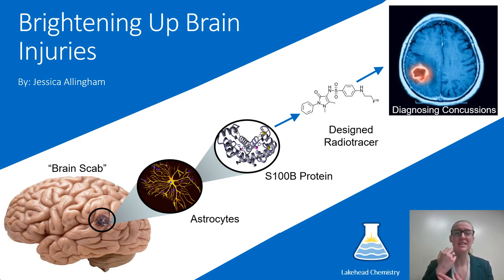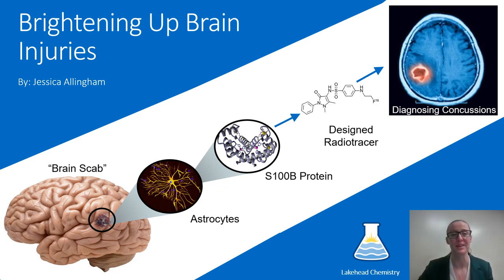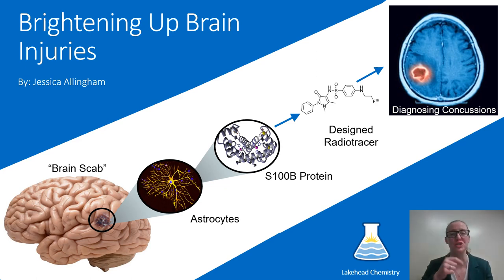When you cut your arm, a scab forms so the skin can heal correctly. Similarly, when you injure your brain, the tissues and cells in that area essentially turn to mush. So the astrocytes form a scaffold around which the cells and tissues can heal and reform correctly. The only difference is that a doctor can see the scab on your arm and know that you are injured, but they cannot see the scab in your brain.